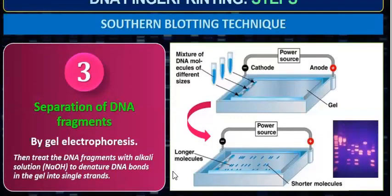The next step is separation of the DNA fragments by gel electrophoresis. The DNA is very big, so we have digested it into small fragments. We separate the fragments on the basis of density using gel electrophoresis. Then we treat the DNA fragments with an alkali solution — such as NaOH — to denature the double-stranded DNA into single strands.